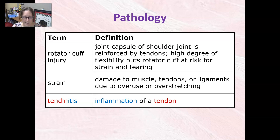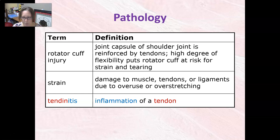Rotator cuff injury: the joint capsule of the shoulder joint is reinforced by tendons. A high degree of flexibility puts the rotator cuff at risk for strain and tearing — rotator cuff injuries usually have to do with the shoulder. A strain is damage to the muscle, tendon, or ligaments due to overuse or overstretching. Lastly, tendonitis is the inflammation of a tendon. That's another video — just one more on all the diagnostic and therapeutic procedures, and I'll see you there.